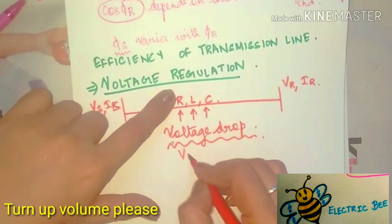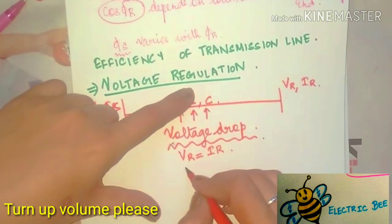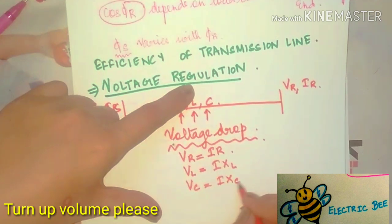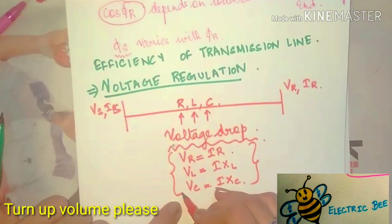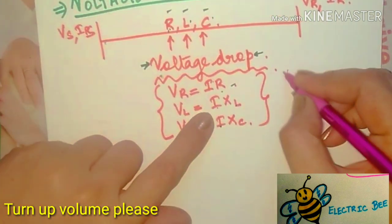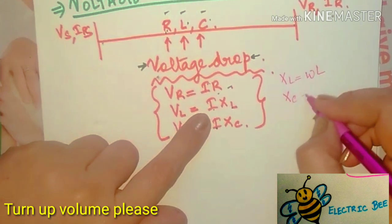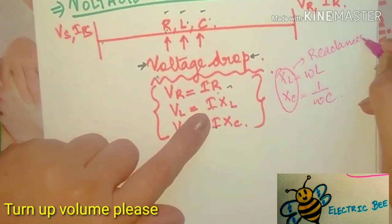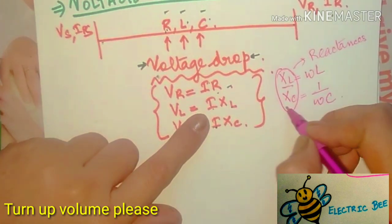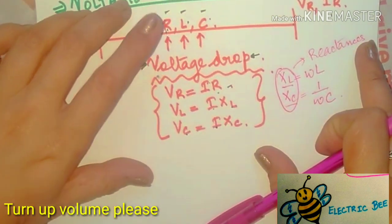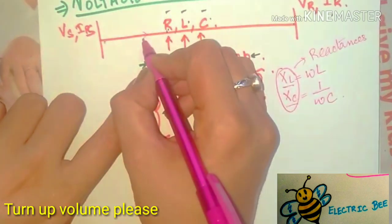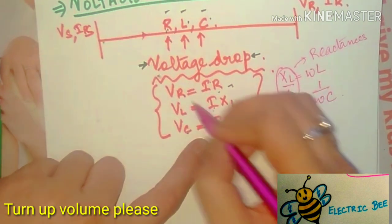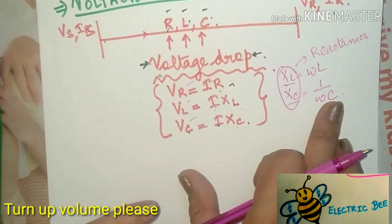Because of the transmission line parameters, voltage drops occur. The voltage drop across resistance is VR = I × R, across inductance is VL = I × XL, and across capacitance is VC = I × XC. Here XL = ωL is the inductive reactance and XC = 1/(ωC) is the capacitive reactance.